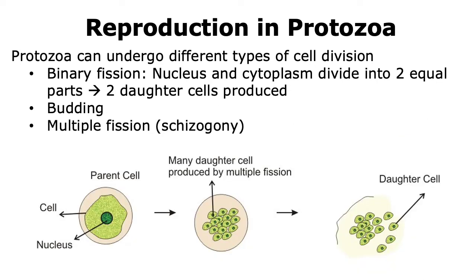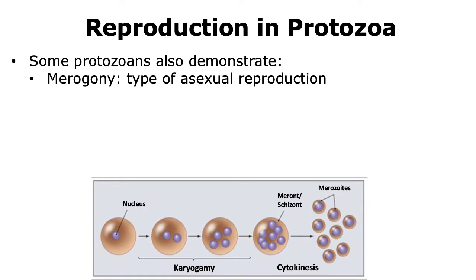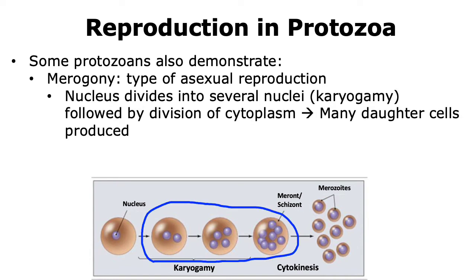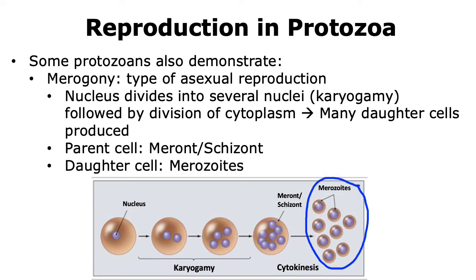Multiple fission, or schizogony, is another type of reproduction observed in protozoa, where a parent cell can give rise to many daughter cells that are then released. Thus, in the case of multiple fission, we have more than two daughter cells produced from the parent. Merogony is a type of asexual reproduction under multiple fission. In the case of merogony, the nucleus of the parent divides to form several nuclei, which is called karyogamy. Once karyogamy occurs, there is a distribution of the cytoplasm around the different nuclei to form the daughter cells. The parent cell that undergoes merogony is called the meront, or schizont, and the daughter cells formed are called merozoites.